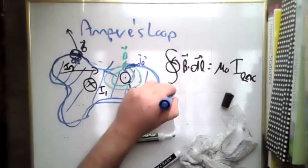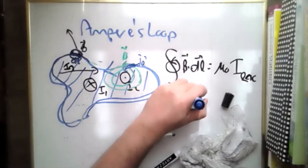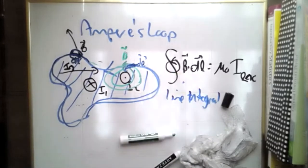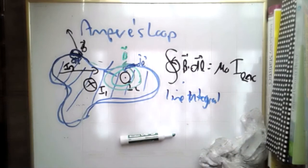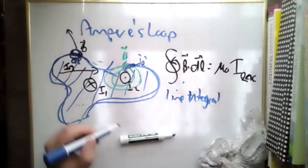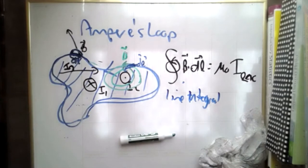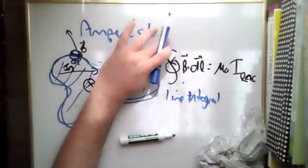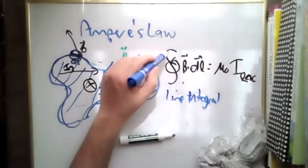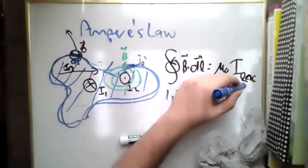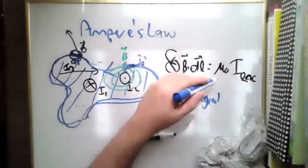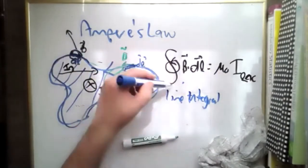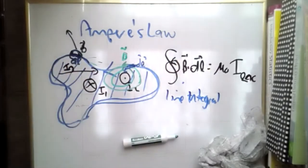Line integrals are hard — much harder than surface integrals. You have to parameterize B and parameterize dL. They're probably the worst integral in Calc 3. But Ampere's law says you don't have to do the line integral. Just figure out how much current flows through the area you've carved out, multiply by mu naught, and you know the total contribution of B along that line.